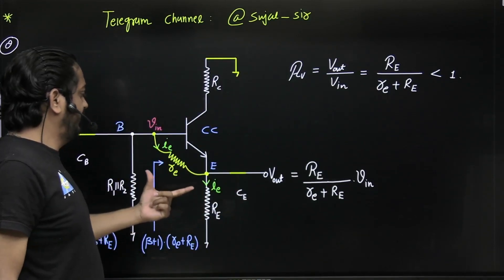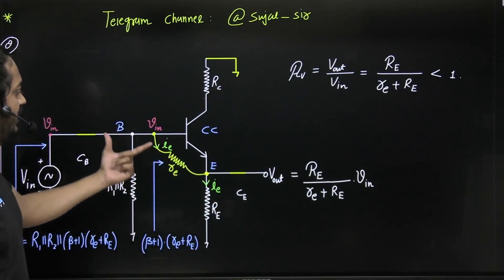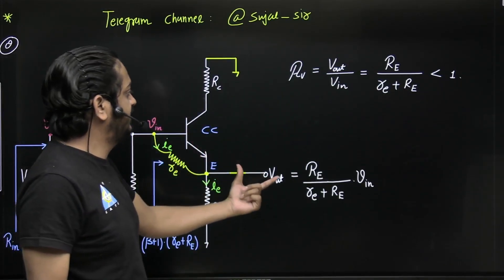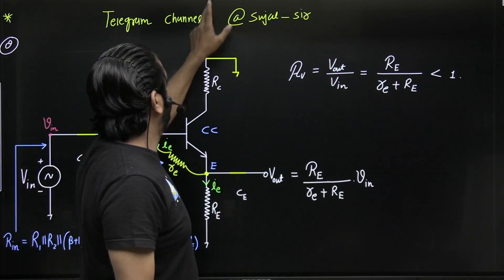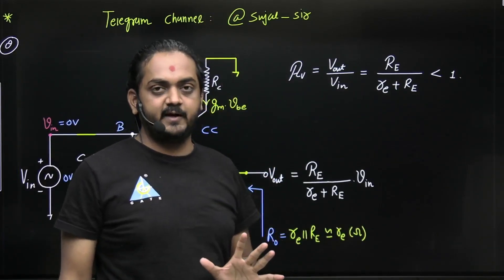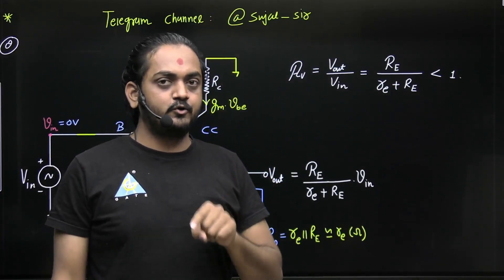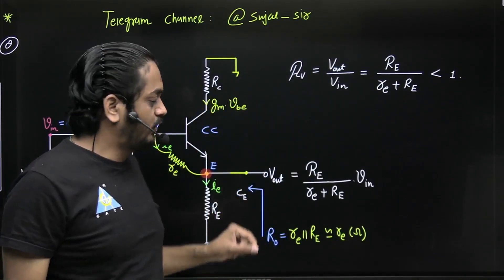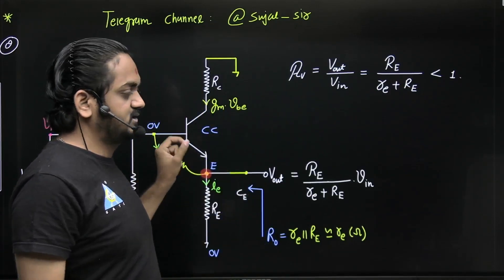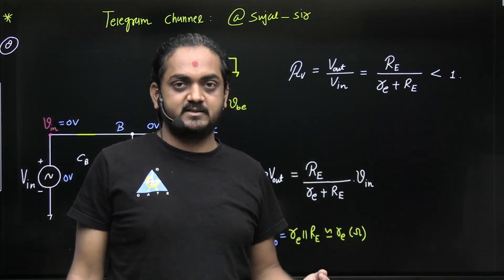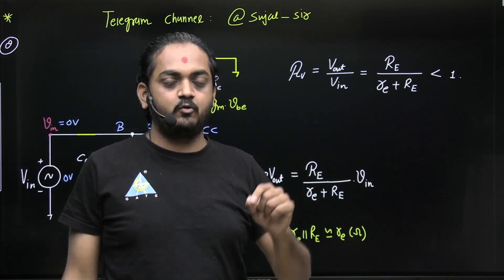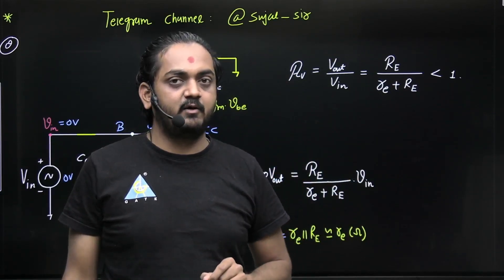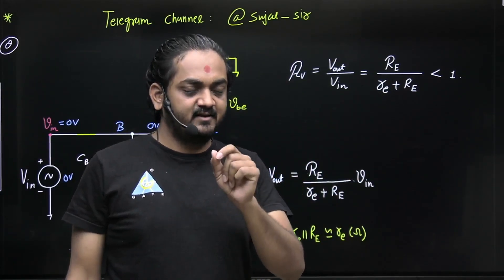So directly you can find all the answers - voltage gain, input impedance, and output impedance. If you are a new student, before watching this class you should first cover my previous classes: part 1, part 2, and BJT concepts. Thank you.